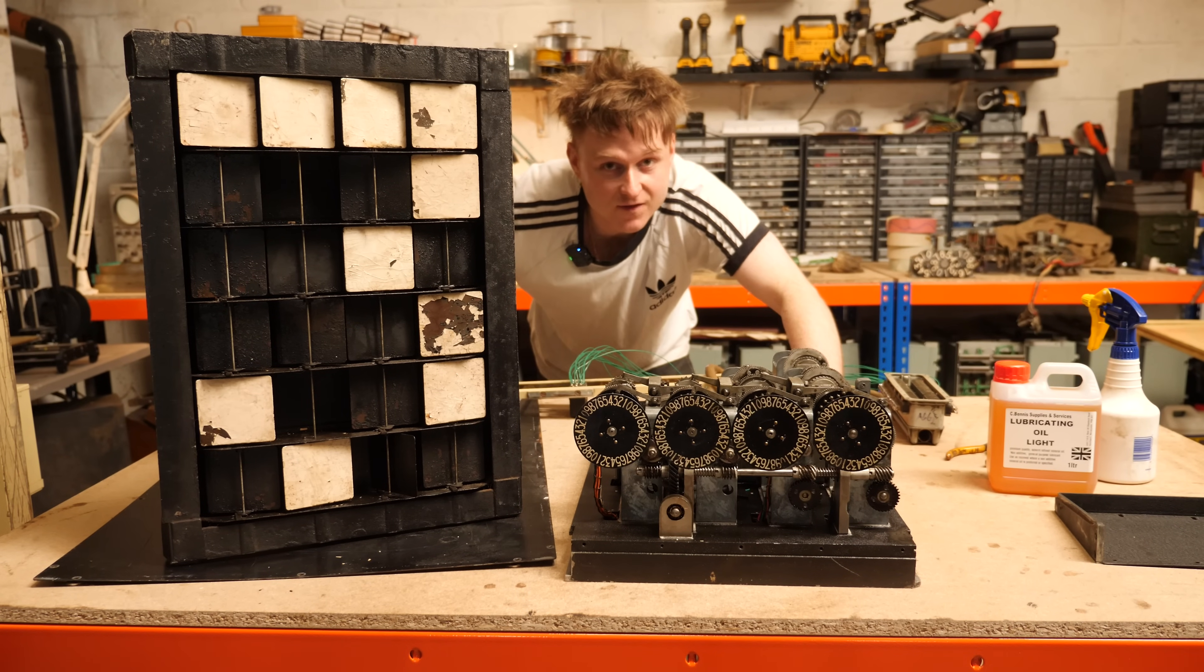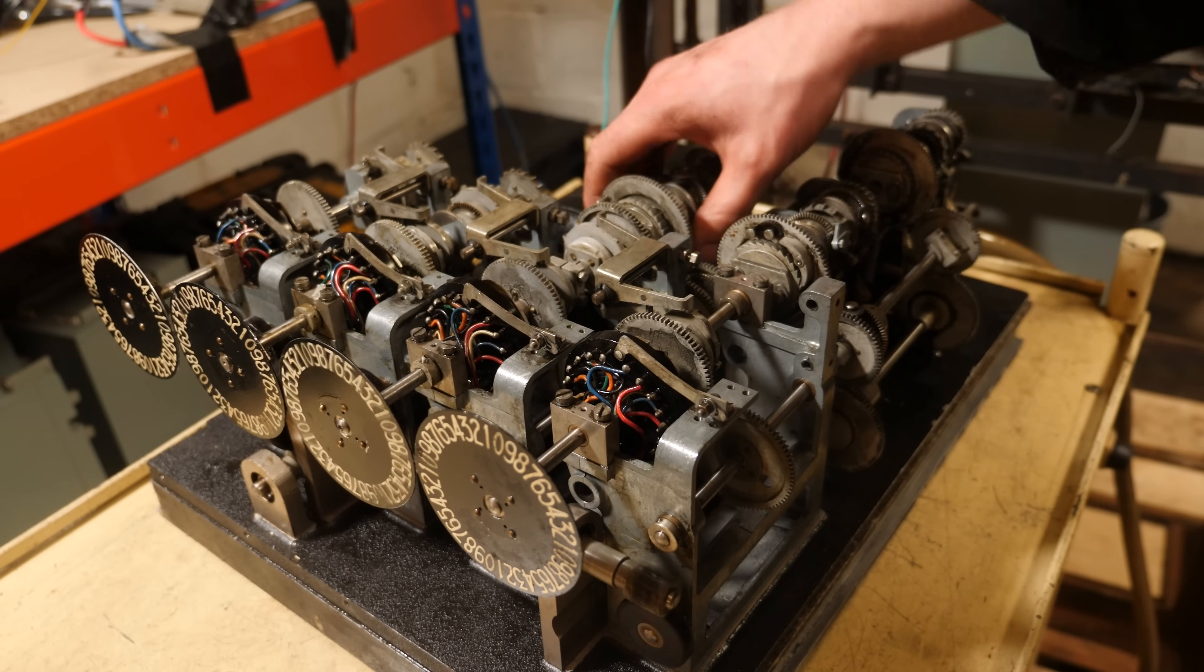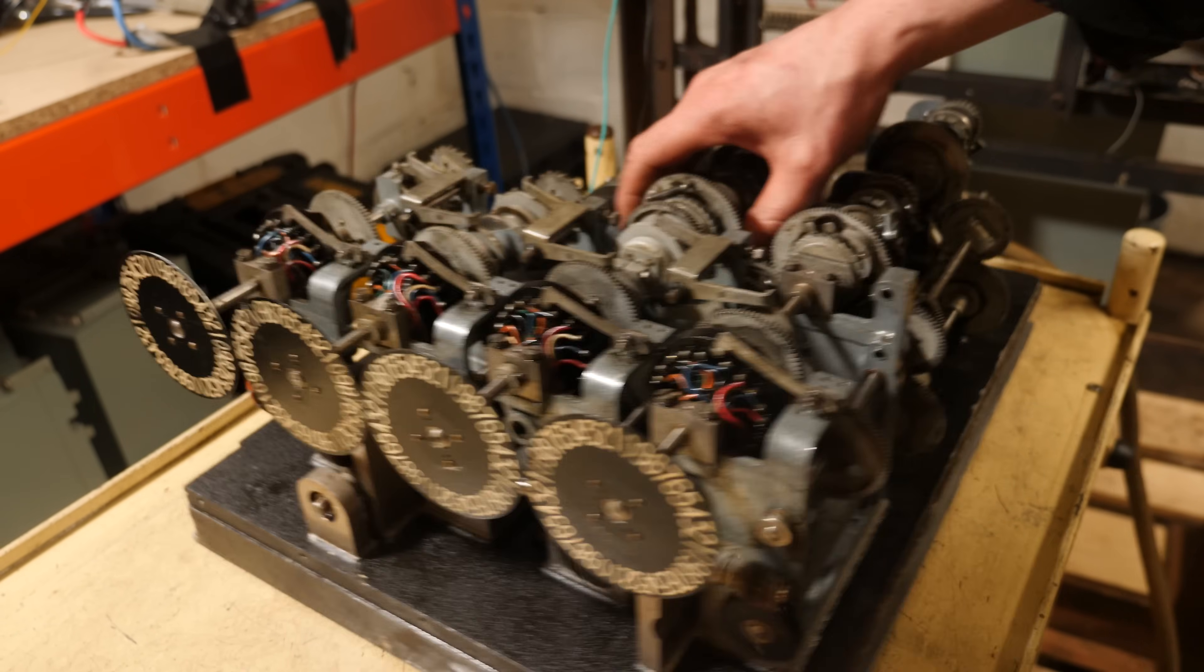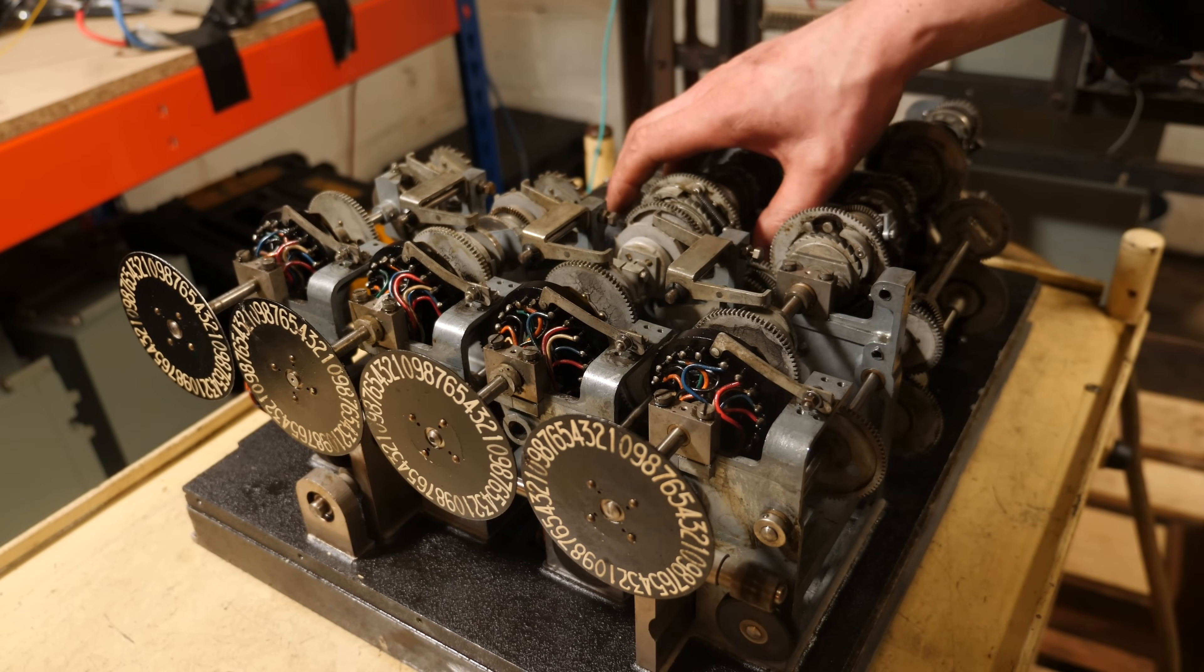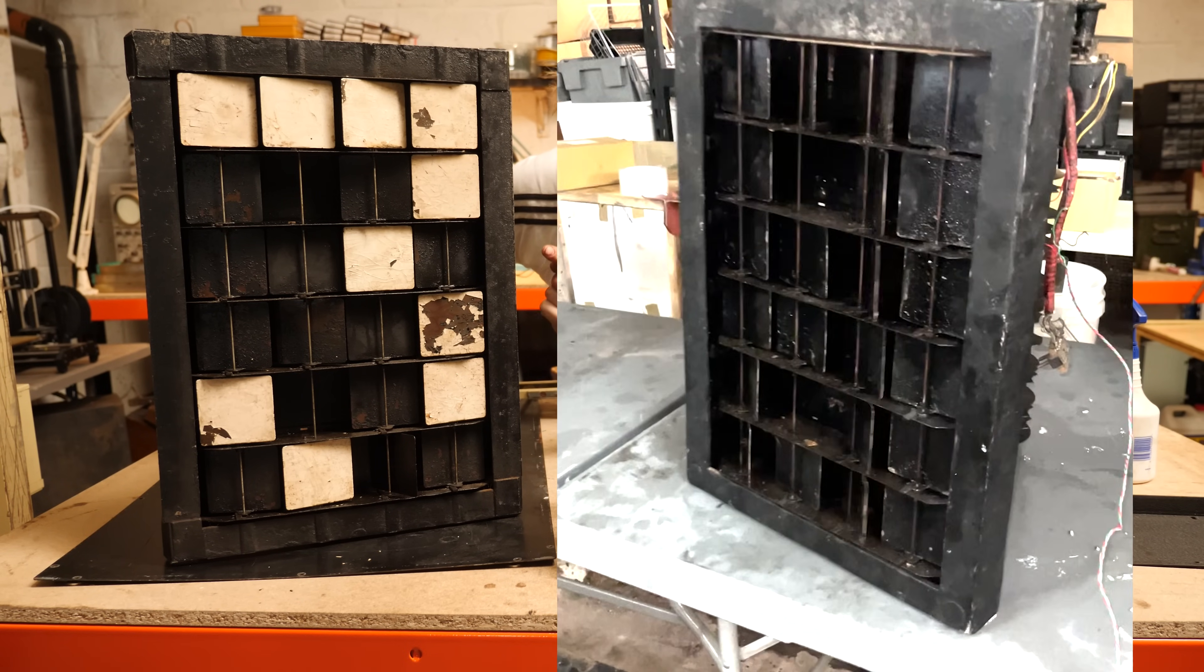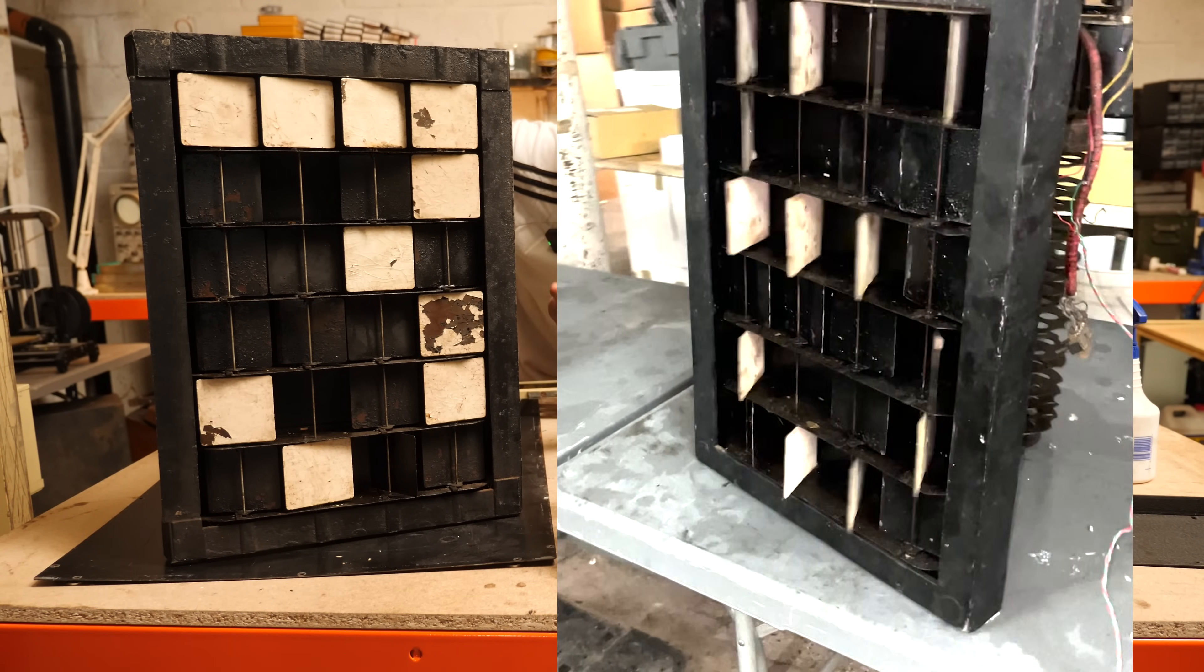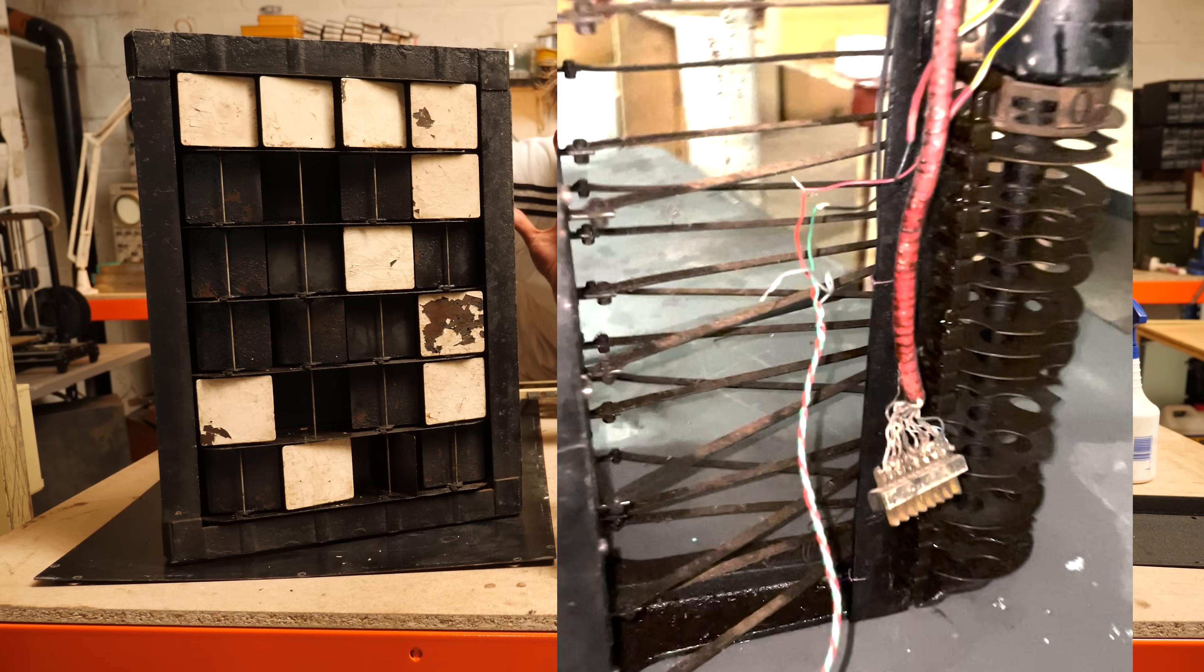Hello, today we're going to be looking at the totalisator again. In the last video we looked at the aggregator, this thing that added together all the bets for a single greyhound in this setup, and we've also looked at the flaps I think they're called. This is the display that is a camshaft driven display mechanism that basically counts up and down the numbers.